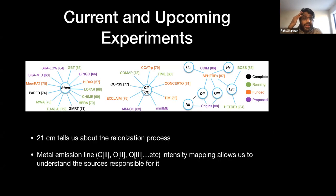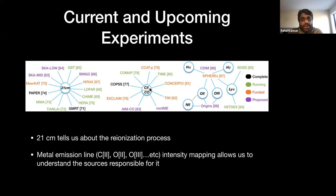Here is a full list of line intensity mapping experiments that are about to come online. The 21-centimeter lines measure the neutral hydrogen in the universe — there are a lot of low-redshift experiments and also high-redshift experiments like HERA and SKA. There are also sub-millimeter and IR experiments in the rest frame of the galaxy, such as CO and C2. Secant Prime and Concerto are currently online, and COMAP has also released some data in the last year. Finally, SPHEREx will also measure a lot of emission lines in the rest-frame optical of the galaxy.